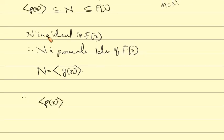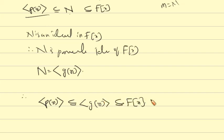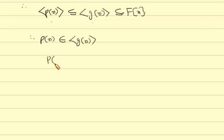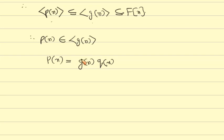The ideal generated by p(x) is a subset of N. N is contained in the ideal generated by G(x), which is a subset of F[x]. Every element of N is also an element here. Therefore, p(x) belongs to G(x), meaning p(x) is a multiple of G(x). So p(x) = G(x)·Q(x) for some Q(x) in F[x].